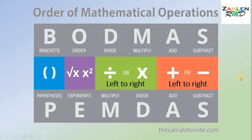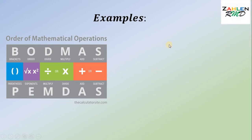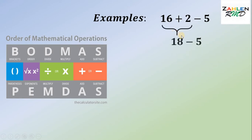To make it clear, let's have some examples. Division or multiplication — we do it from left to right. Addition and subtraction — also from left to right. Our first example is 16 plus 2 minus 5. Since plus comes first, we do addition then subtraction. So 16 plus 2 gives us 18, then 18 minus 5 gives us 13. The answer is 13.